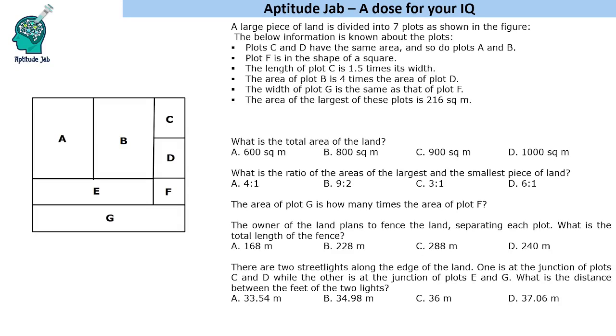Hello everyone, welcome to AptitudeJab. This is a set based on area graph. It says a large piece of land is divided into 7 plots as shown in the figure. The below information is known about these plots. Plots C and D have the same area and so do plots A and B.